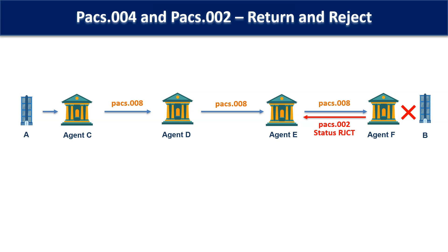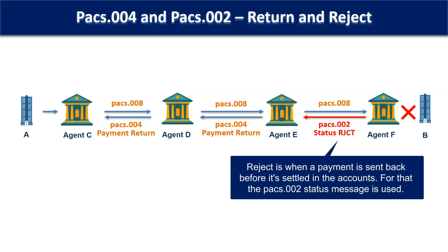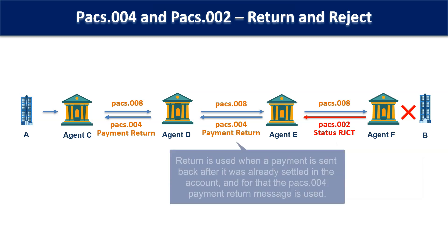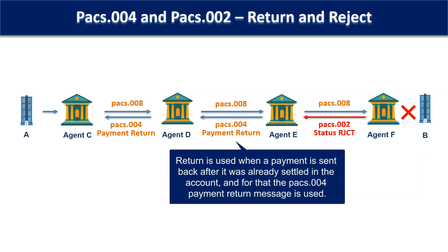While returning the payment, agent E will send the PAG004 message. Likewise, the rest of the agents who also settled their accounts earlier will return the payment using PAG004. So, reject is when a payment is sent back before it is settled in the accounts — for that, the PAG002 status message is used. Return is when a payment is sent back after it was already settled in the account — for that, the PAG004 payment return message is used.